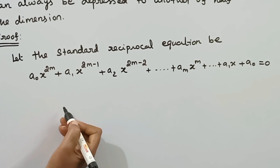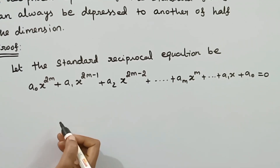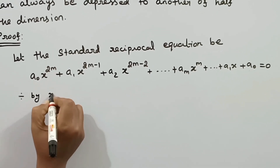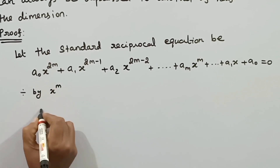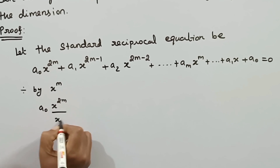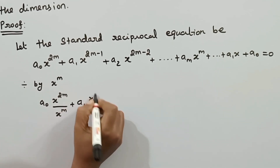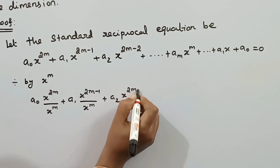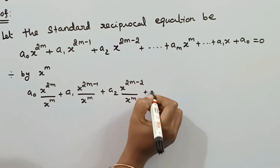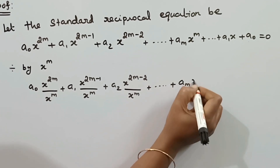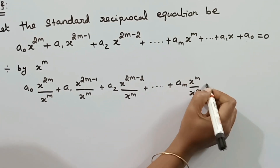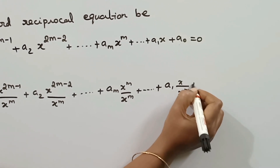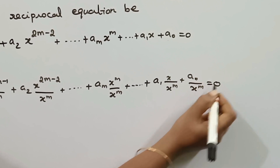We can prove that we can depress the dimension by dividing the equation by x^m. Dividing through by x^m gives: a0·x^(2m) / x^m + a1·x^(2m−1) / x^m + a2·x^(2m−2) / x^m + ... + a1·x^m / x^m + ... + a1·x / x^m + a0 / x^m = 0.